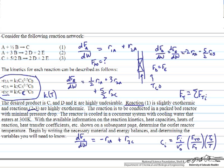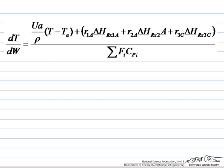Those are all the material balances needed. If this were isothermal we could solve just those, but we need an energy balance because this is not isothermal. The correct energy balance for a packed bed reactor tracks how temperature changes as reactants see an increasing mass of catalyst — dT/dW. If temperature is going up this quantity is positive; if going down, negative; near zero for an approximately isothermal reaction.